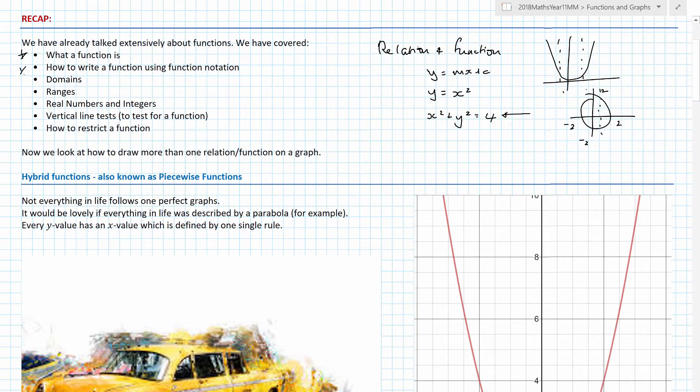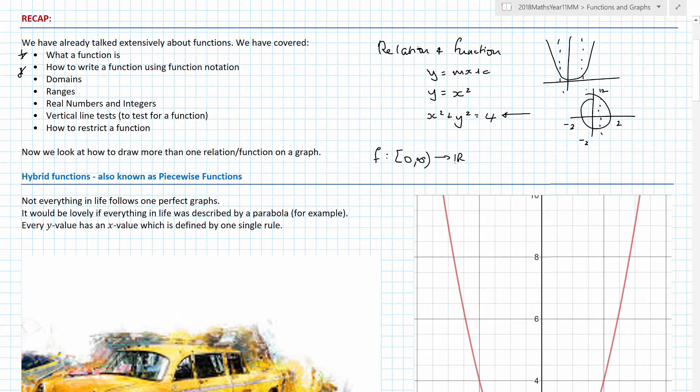We've talked about function notation, so that's where you've got f with a colon and then you've got your domain, which is mapped onto real of some function equals x². So again, knowing what each of these sections means is critically important. This here is your domain, this is your codomain, this is your actual function. Please make sure that that f and that f match.